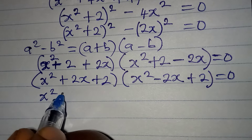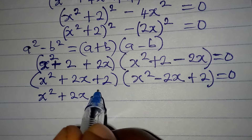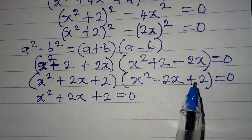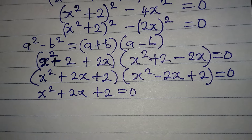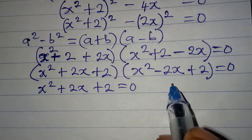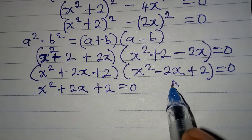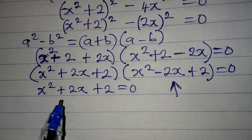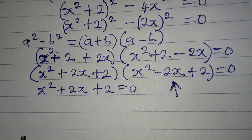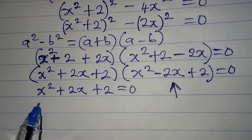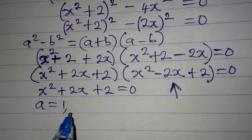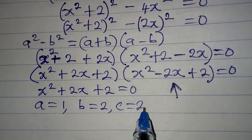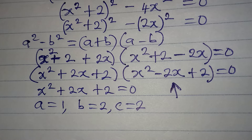It is either x squared plus 2x plus 2 equals zero, or the second factor equals zero. Let's deal with the first one. From here we have a equal to 1, b equal to 2, and c equal to 2.